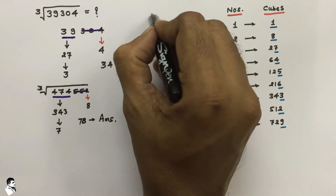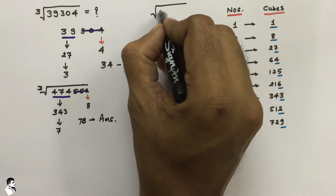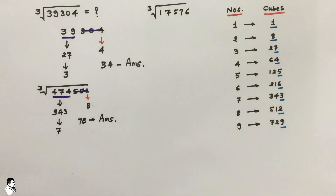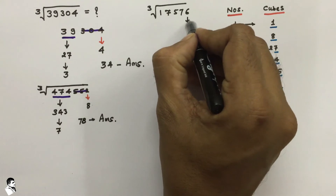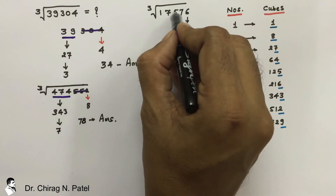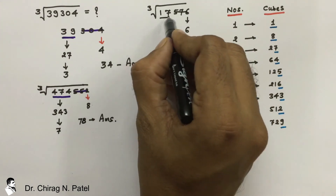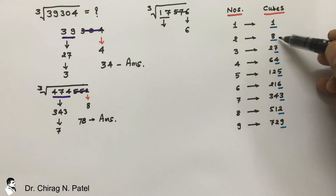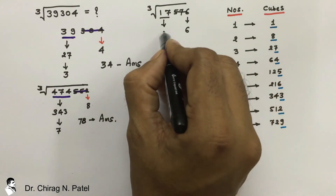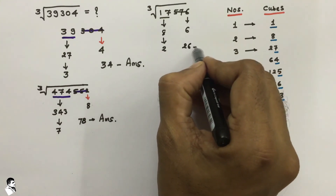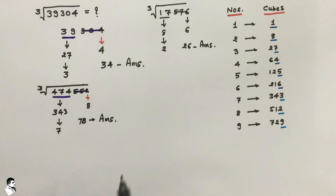Now find the cube root of 17576. The last digit is 6; find 6 in the table — that is the cube of 6. Forget the last 3 digits; the remaining number is 17. The value lower than 17 in the table is 8, which is the cube of 2. So write 2 and 6 together — 26 is the answer.